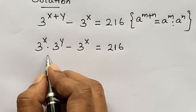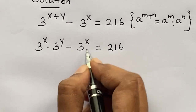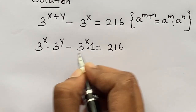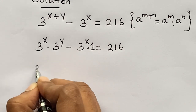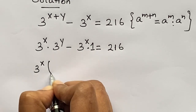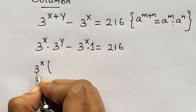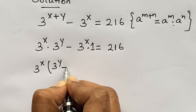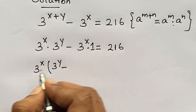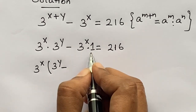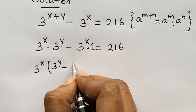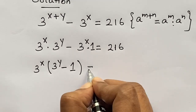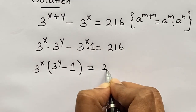Here, in both terms 3 raised to the power x is in common, so we take it out. We get 3 raised to the power x times of 3 raised to the power y minus 1 equals 216.